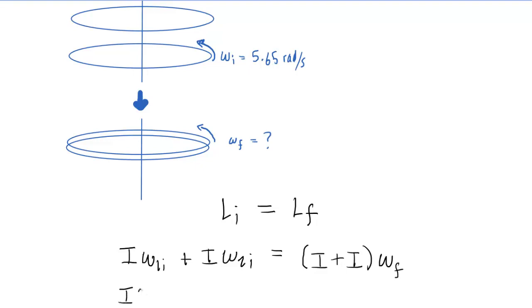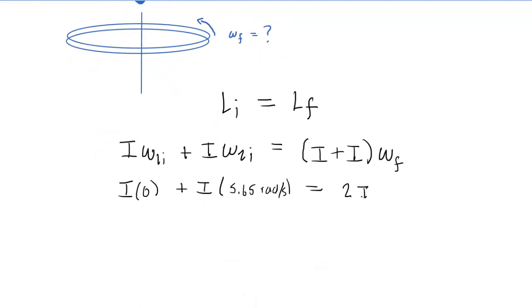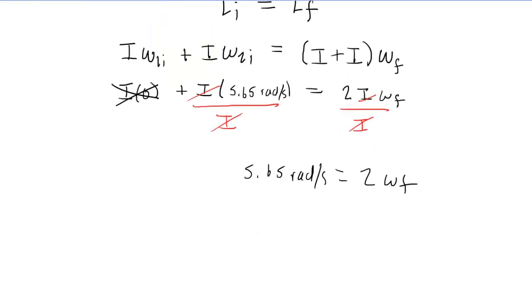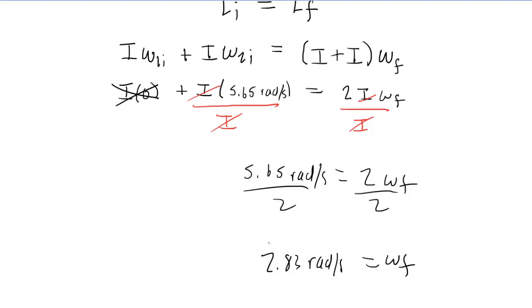So we have I times zero, plus I times the initial angular speed of the rotating disk, which was 5.65 radians per second. On the other side, we simplify I plus I to 2I, times the final angular speed. We eliminate the zero term, then divide both sides by the moment of inertia — those cancel — leaving 5.65 radians per second equals 2 times the final angular speed. Dividing both sides by two, we obtain approximately 2.83 radians per second.